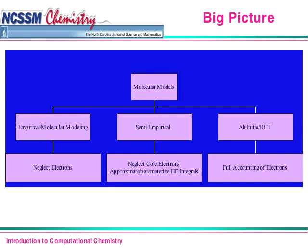Moving over to the far right, we have ab initio or DFT — often placed in the same box, though people sometimes draw them as separate boxes. Ab initio means from the beginning or from scratch. We want to calculate everything we can possibly calculate on the behavior of the electrons — a full counting. Whereas empirical methods completely neglect electrons, ab initio and DFT only pay attention to electrons and actually ignore the behavior of the nuclei.